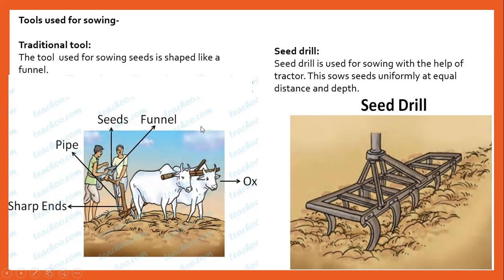The seed drill is also used for sowing. The seed drill sows seeds at a uniform distance and ensures that the seeds get covered by the soil, protecting them from being eaten by birds. The seed drill generally saves time and labor.